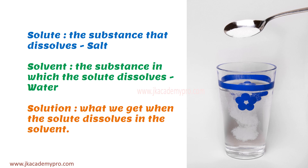Let us understand three terms: solute, solvent, and solution. Solute is the substance that dissolves — in our experiment, it is the salt. Solvent is the substance in which the solute dissolves — in our example, it is the water. And a solution is what we get when the solute dissolves in the solvent, forming a new substance.